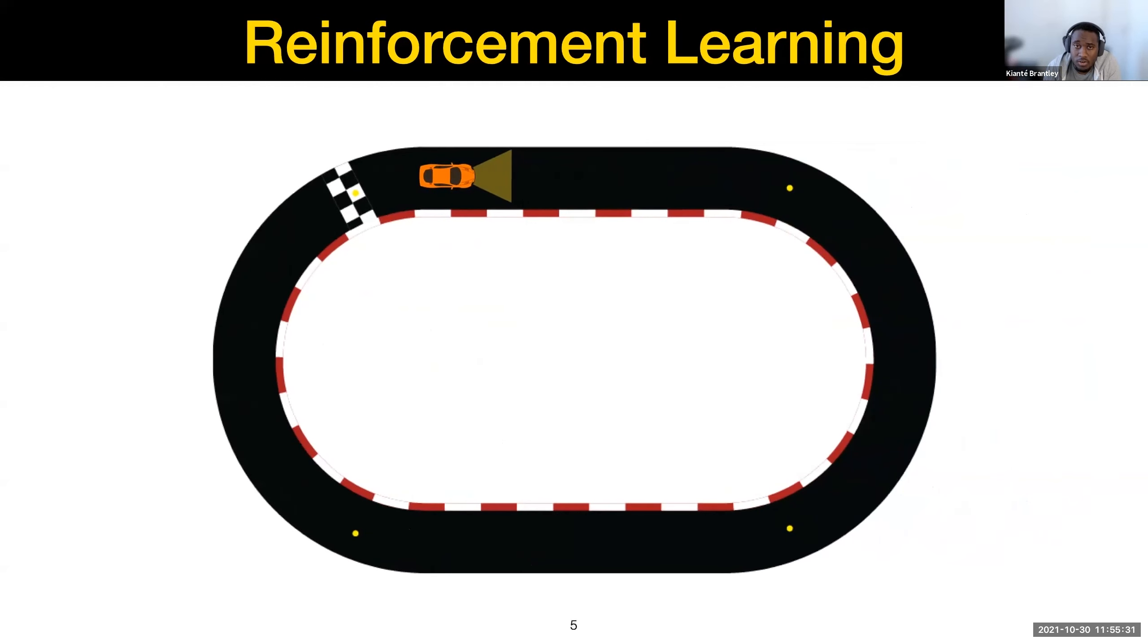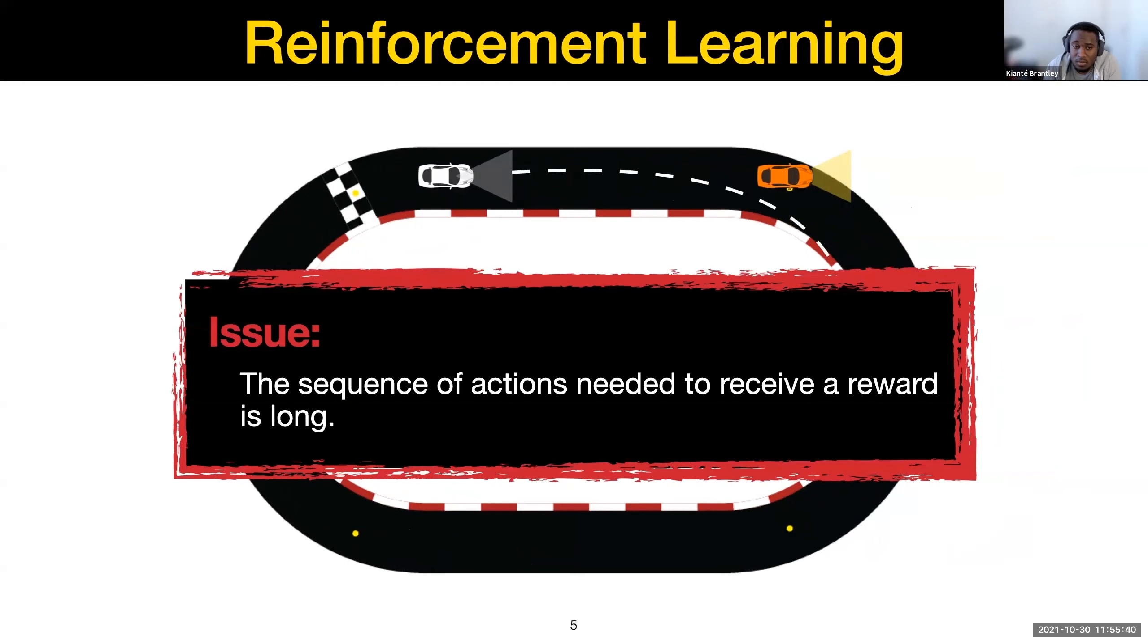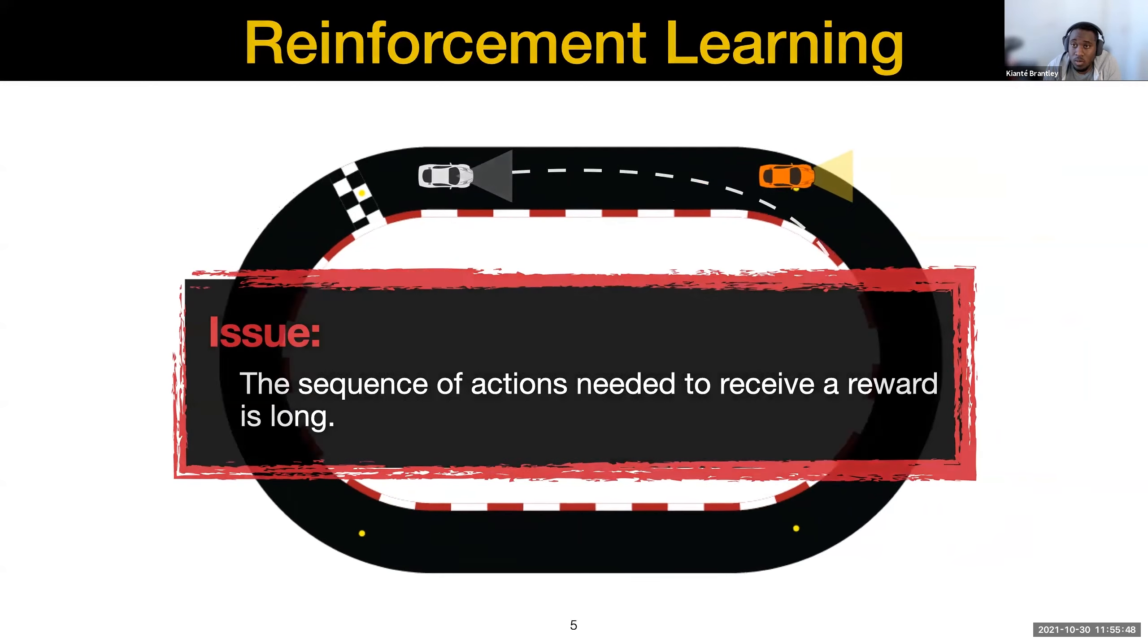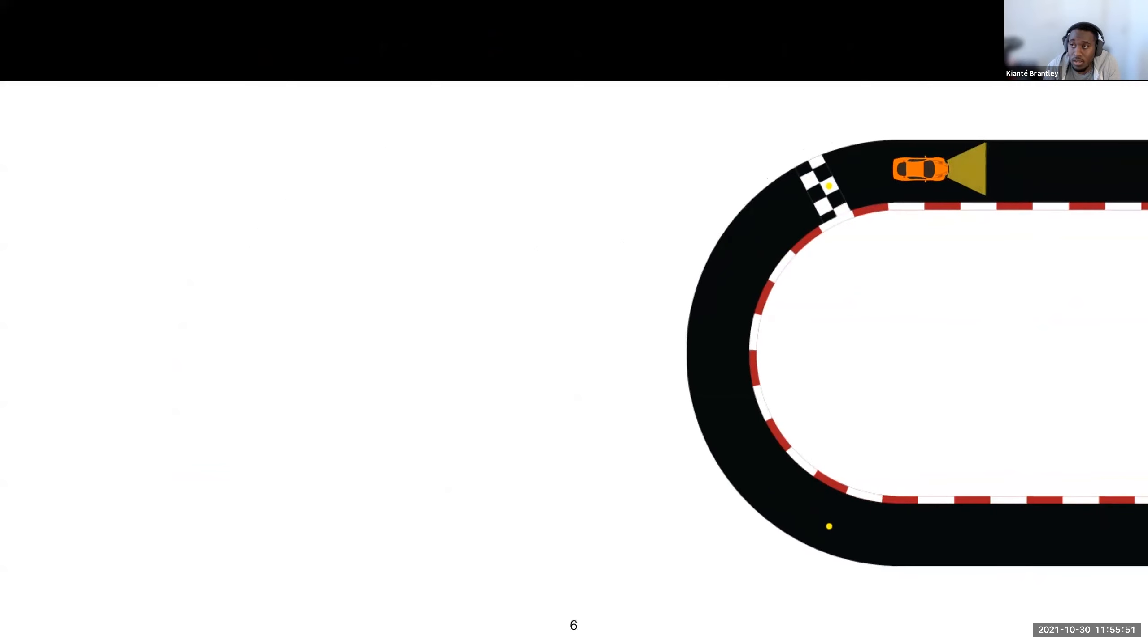Now, if I try to train an agent using reinforcement learning to solve this particular task, the agent will get stuck. And why does it get stuck? The problem is that the sequence of actions needed to receive reward is long. The agent has to go around the entire track in order to learn to get a positive signal. So a lot of my research is done in this area called imitation learning to try to deal with this sparse reward issue.